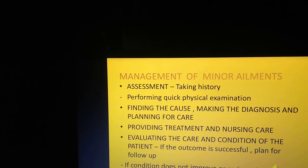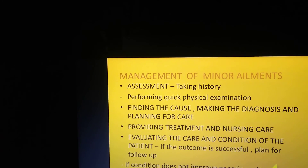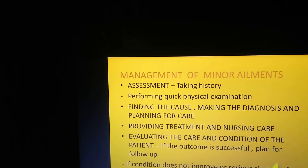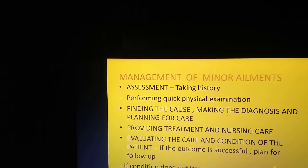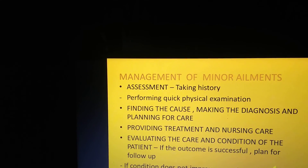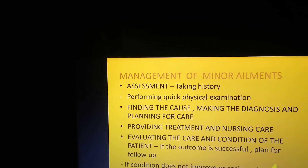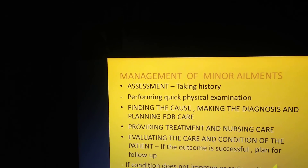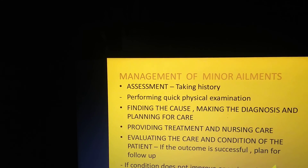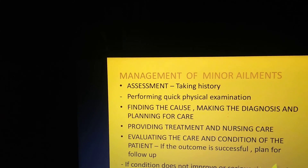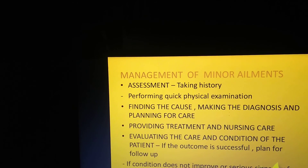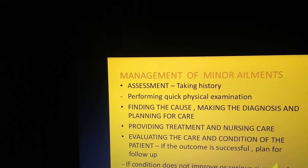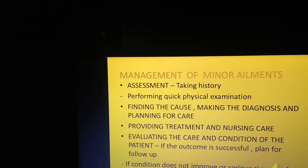So to recap: minor ailments are defined as slight illnesses. They are divided into general — which need immediate first aid treatment — and systemic minor ailments. Systemic means the illnesses occur inside the body, whether inside the ear, inside the mouth, or affecting the digestive or reproductive system. That is why they are called systemic minor ailments.